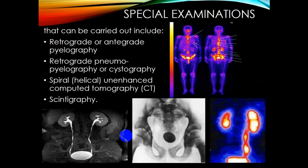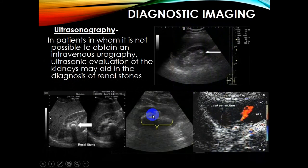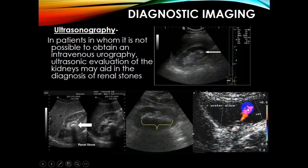Special examinations include retrograde and anterograde pyelography, retrograde pneumopyelography, cystography, spiral helical unenhanced CT, and scintigraphy. Here you can see a large stone in the urinary bladder, and here normal kidneys, ureters, and bladder. Where intravenous urography is not possible, ultrasonic evaluation is more commonly used. Ultrasound can show stones in the renal pelvis and calyces, possible kidney inflammation, and the presence of urine or stones.